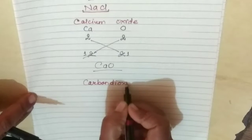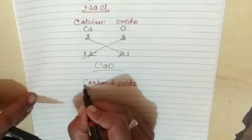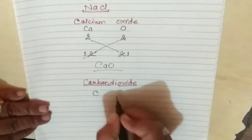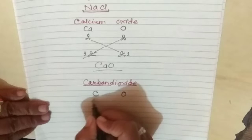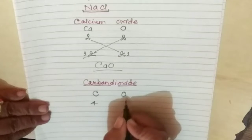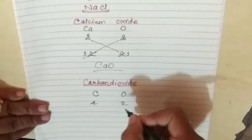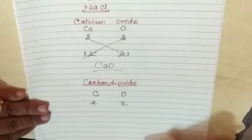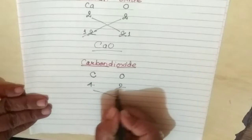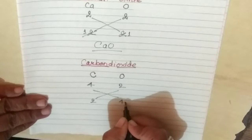The next example is Carbon Dioxide. Here we have Carbon and Oxide. The symbol is C and O. The valency of Carbon is 4 and Oxygen is 2. Now criss cross: the 2 will come to Carbon and the 4 will come to Oxygen.